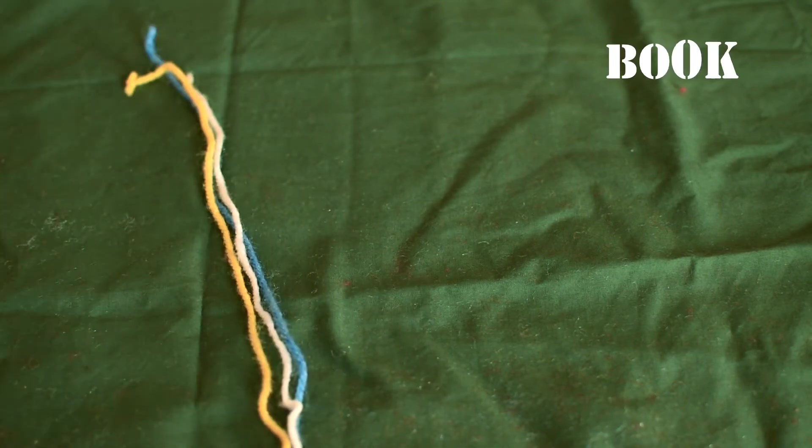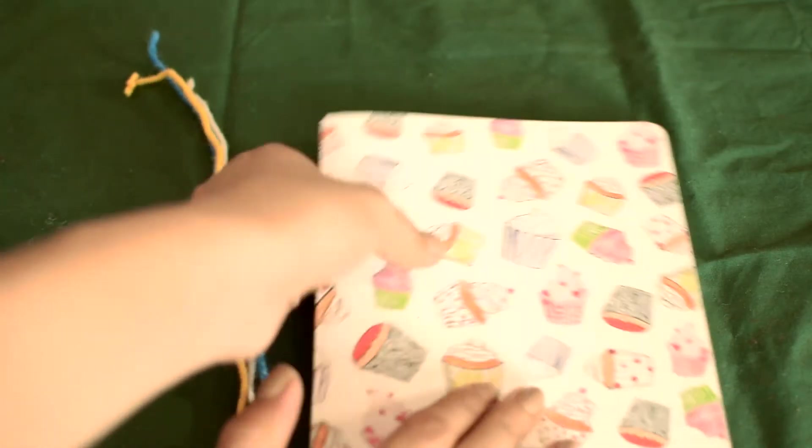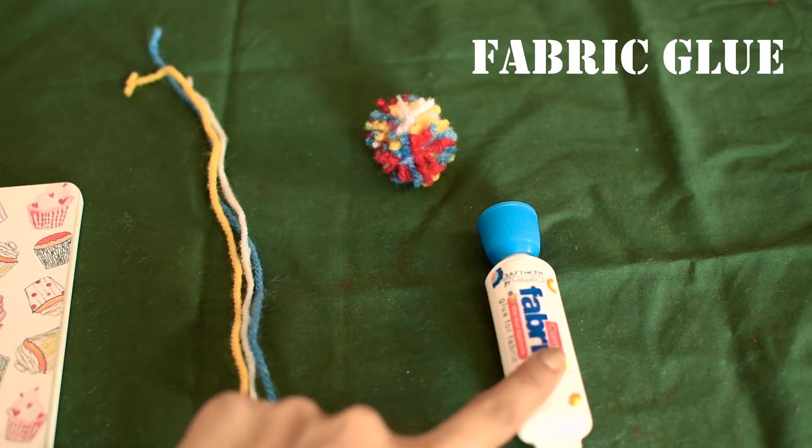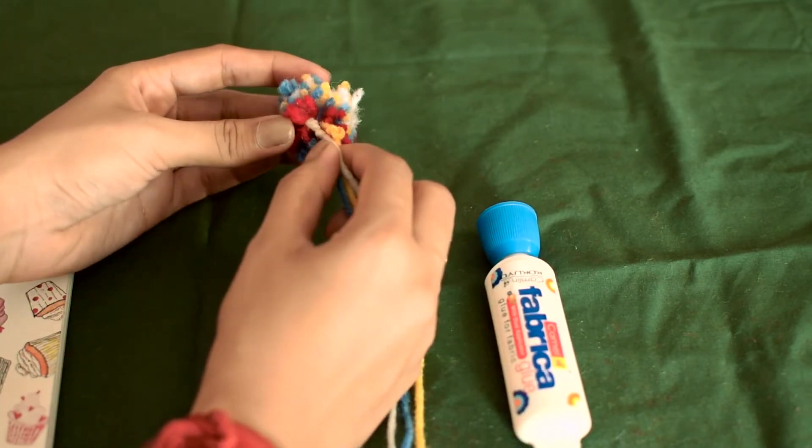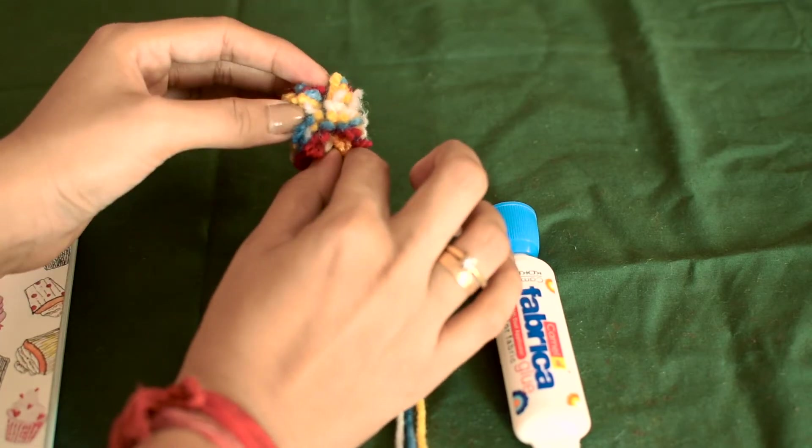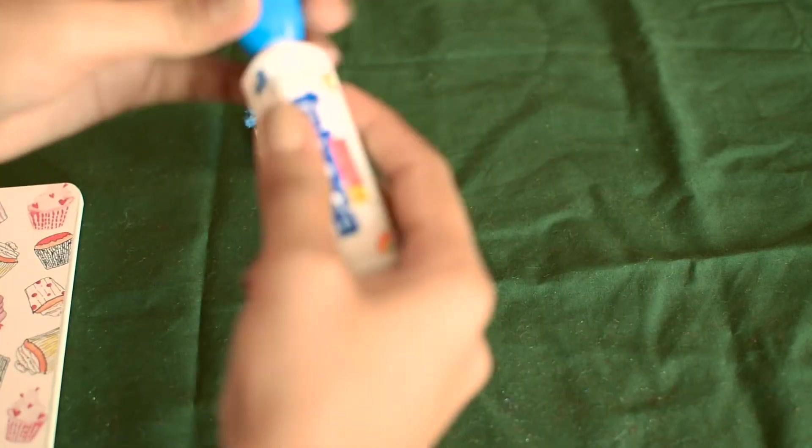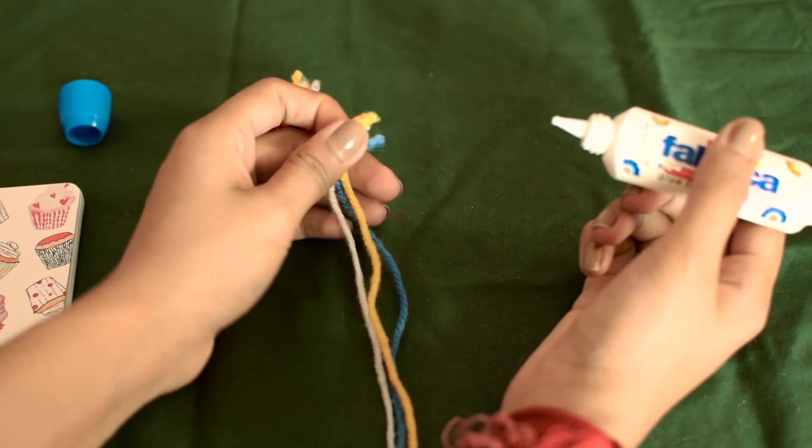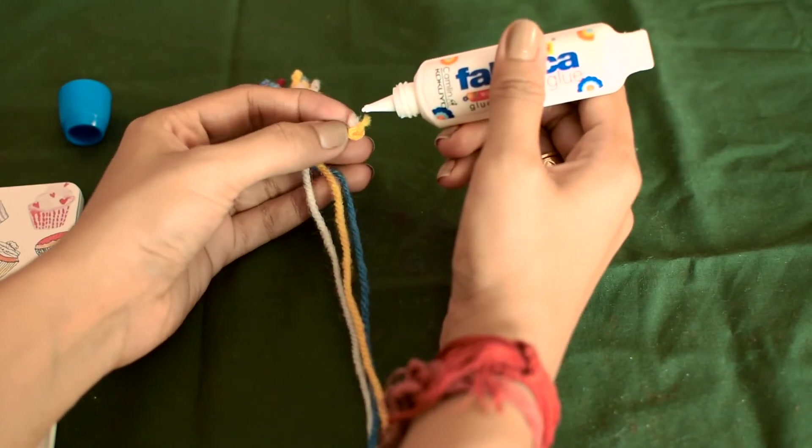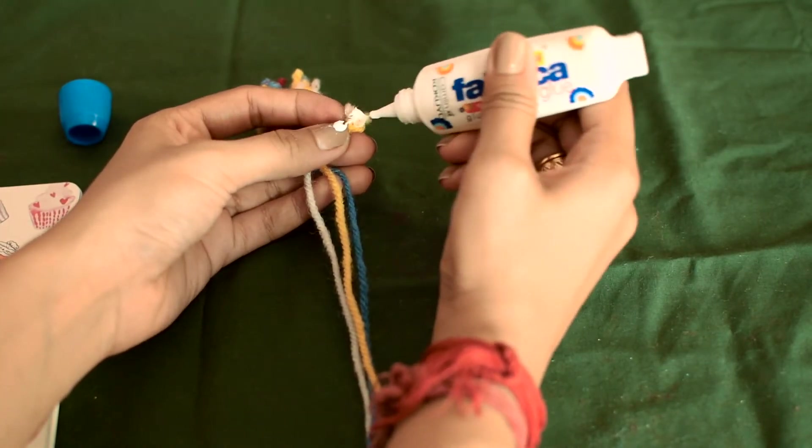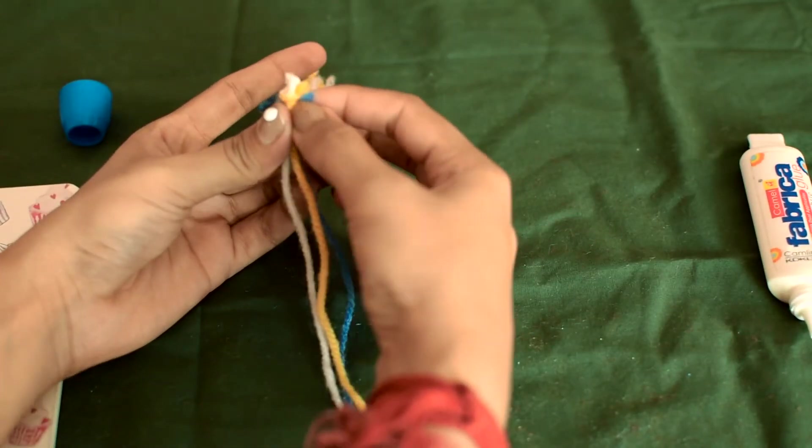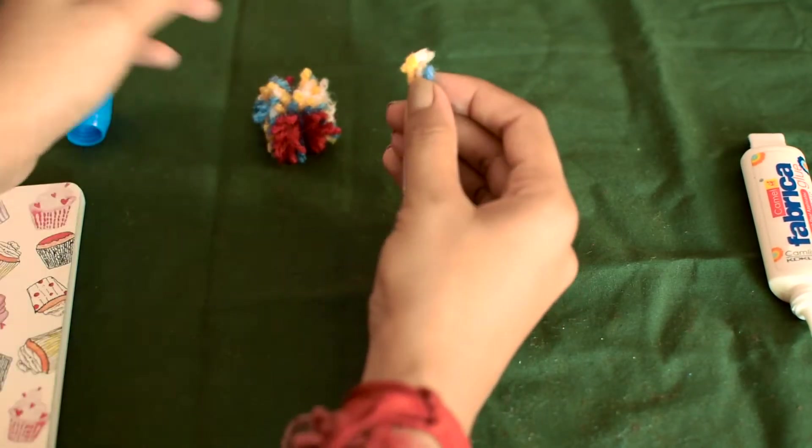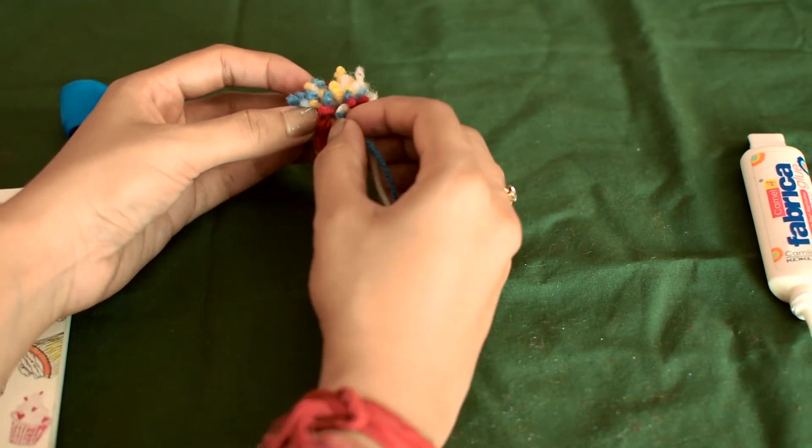All you need for this is the assorted pom-pom, some yarn, a book, and some fabric glue. I have taken three colors here for making the bookmark: white, yellow, and blue thread. Now I'm applying some fabric glue on one side of the thread and gluing the thread to the pom-pom.